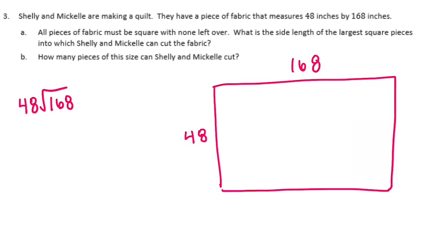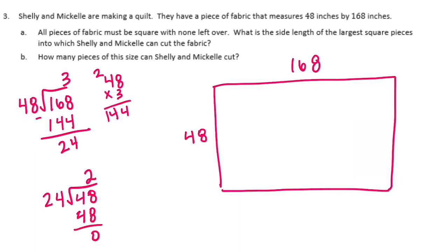So 48 goes into 168. 48 times 2 is 96. 48 times 3 is 144. It couldn't go in another time. It would be too big. So we get 24 left over. So let's do 24 divided by 48. 24 goes into 48 twice. We have no remainder, so our GCF is 24.